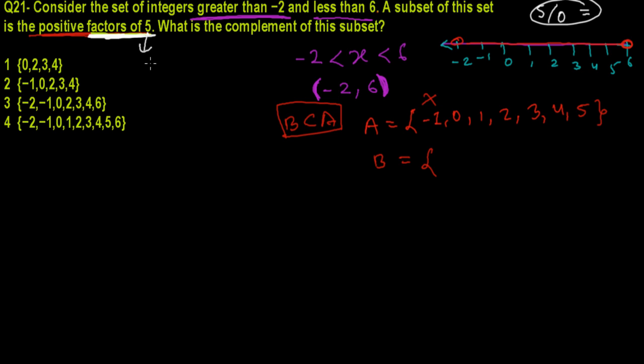So yes, 1 is our factor of 5 which is positive also. 2 cannot divide 5 because if you divide 5 by 2, you'll get the remainder 1. Similarly when 3 will divide 5, you'll get the remainder 2. Similarly 4 when dividing 5, you'll get the remainder 1.